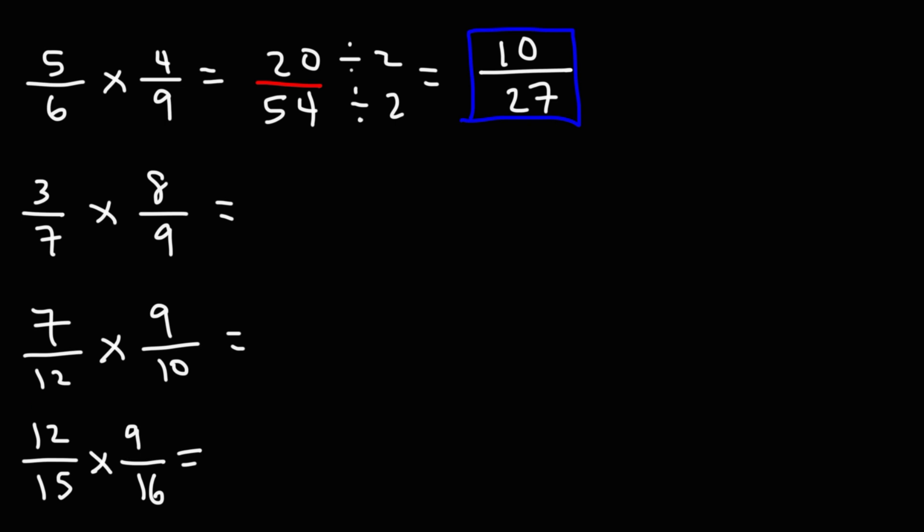Now let's try the next one. 3 times 8 is 24. 7 times 9 is 63. Now we can't divide 63 by 2, but 24 and 63 are divisible by 3. 24 divided by 3 is 8. 63 divided by 3 is 21. And that's as far as we can go for this problem. So the answer is 8 over 21.